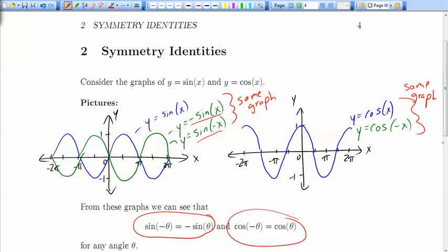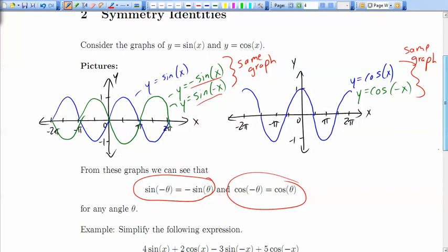So we get those two symmetry identities, and they're true for any angle at all. Now, notice the difference. For the sine one, if you have a negative one multiplier inside the brackets, you can bring it out front. For the cosine one, if you have a negative one multiplier inside the brackets, you can just drop it. Two very different behaviors.